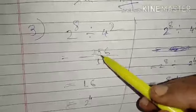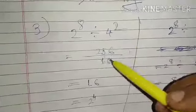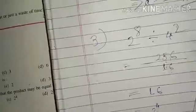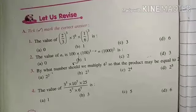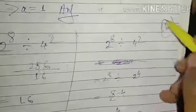2⁸ equals 256. Dividing in fractional form: 256 ÷ 16 = 16. But since the answer is expected in exponential form, we write 16 as 2⁴. Alternatively, write 4² as 2⁴, so we have 2⁸ ÷ 2⁴.